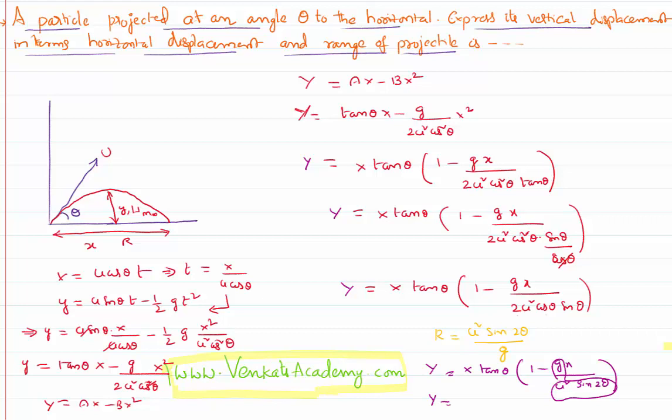So we got a formula: y = x tan θ (1 - x/R). This is the expression of vertical displacement in terms of horizontal displacement as well as the range of the projectile. Thank you for watching.